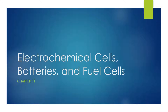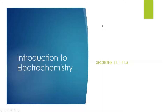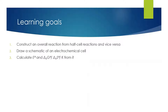Today we'll start by discussing electrochemistry, focusing on an introduction to the elements of electrochemistry. Our learning goals for today are to construct an overall reaction from various half-cell reactions found in tables and charts, draw a schematic of an electrochemical cell and understand why electrons flow from one side to the other, and calculate E naught — the standard electrochemical cell potential — and use that to calculate free energy, entropy, and equilibrium constant.